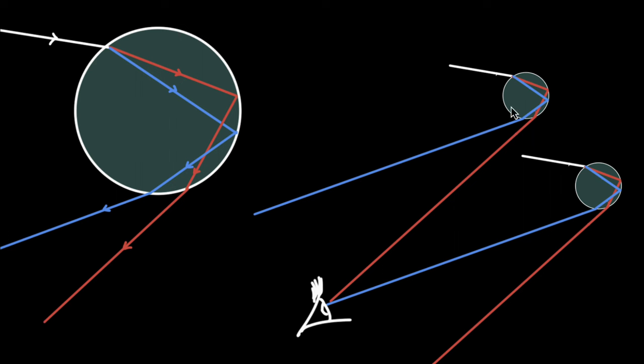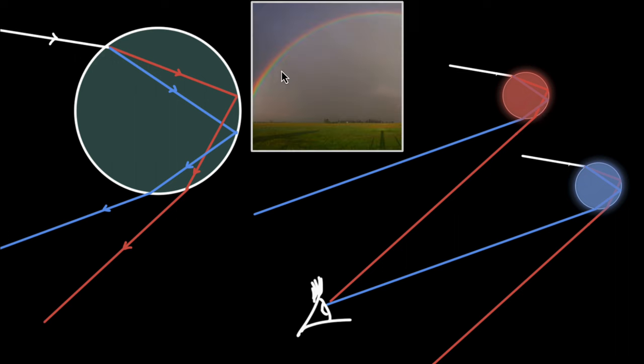And so now, when you look at the raindrops, this raindrop appears red to you, this raindrop appears blue to you. And of course, all the raindrops in between appear will appear different colors. And this is the reason why you see, the red is on the top and the blue is in the bottom.